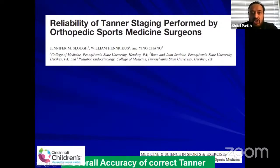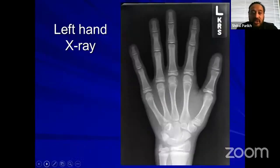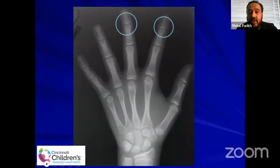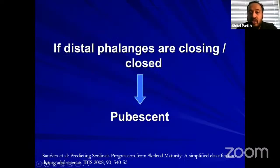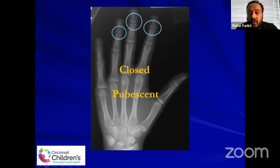I would use a left-hand x-ray to look at bone age based on the atlas. Another fast way to determine skeletal maturity is looking at the distal phalangeal physis. If the distal phalangeal physis are open, the patient is prepubescent — they have not reached peak height velocity and have more than two years of growth remaining. If these physis are closing or closed, the patient has reached peak height velocity and remaining growth is less than two years. This is based on work from scoliosis studies by Sanders.